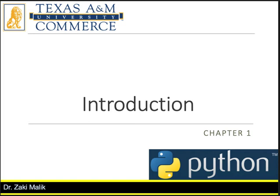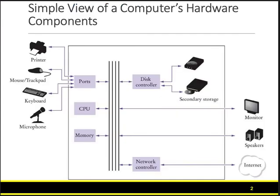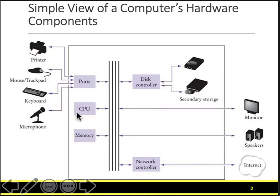Let's start with the first lecture — the introduction. This is a basic view of a computer system and its different components. A computer has memory, which is your RAM, and a CPU, which is the brains of the computer. It also has different types of ports through which your keyboards and microphones connect.